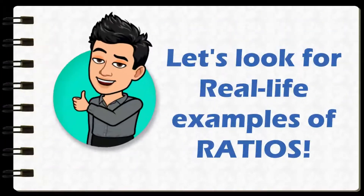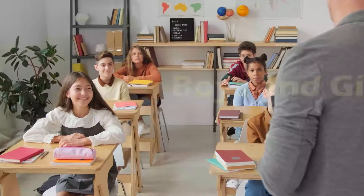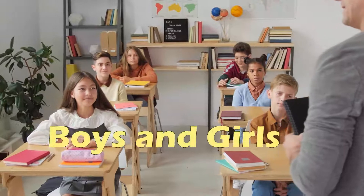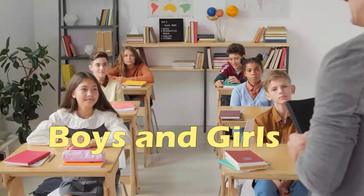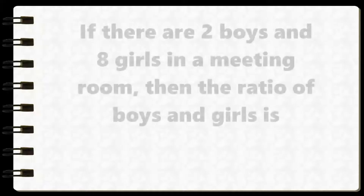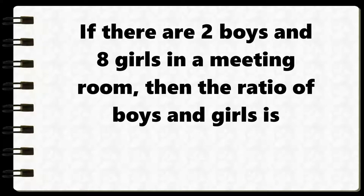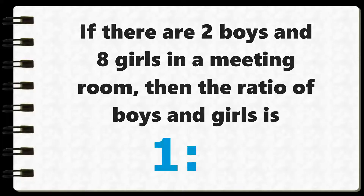Now let's write situations into ratios. Boys and girls: if there are two boys and eight girls in a meeting room, then the ratio of boys to girls is 1 to 4.